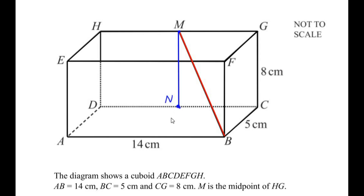Using point N, let us draw another straight line parallel to BC that joins AB, and let us mark that point as P. So M is the midpoint of HG, N is the midpoint of DC, and P is the midpoint of AB. The length MN becomes 8 cm because it is parallel to GC, and NP becomes 5 cm because it is parallel to BC. Since N is the midpoint of DC and DC equals 14 cm, NC becomes 7 cm.